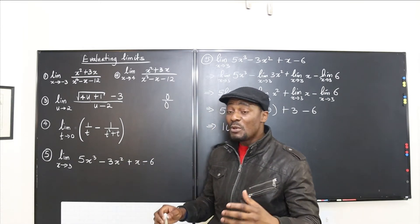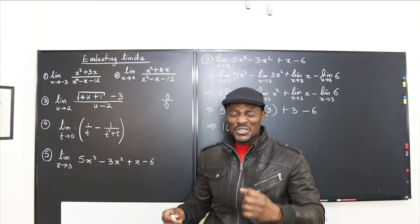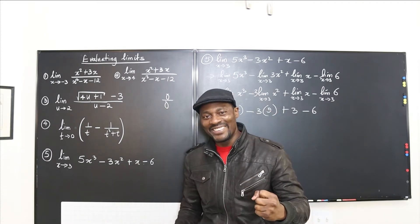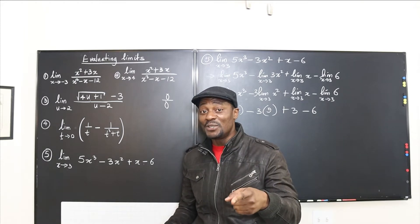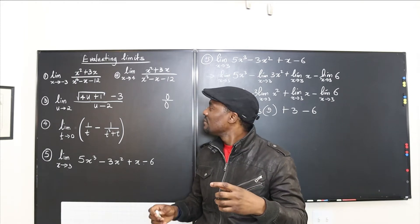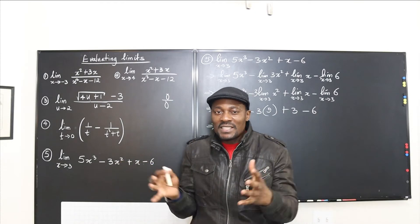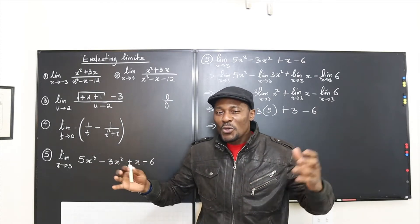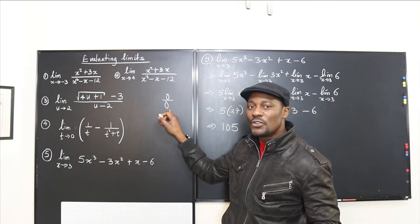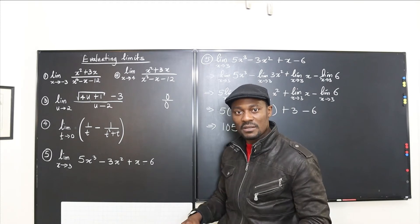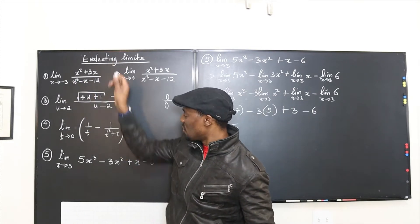But every time you do direct substitution and get zero over zero, it is a big sign that you can use algebraic manipulation to find your answer — you should say yes! It's not over, because there's something else you can do. You can factor, you can rationalize, you can collect like terms, you can do so many things. You're still going to get an answer; you just need to keep working.